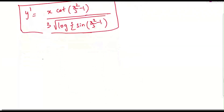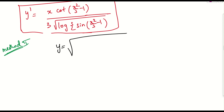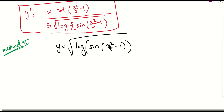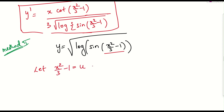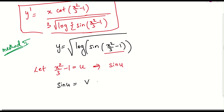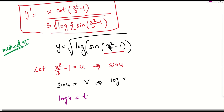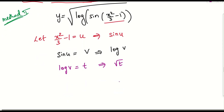If you feel this is a little bit difficult or confusing, let us do the second method. Come on to Method 2. Let me write the question: y equals root of log of sin of x squared by 3 minus 1. What I will do is simply take x squared by 3 minus 1 as u. Then sin u — take that as v. Then take log v as t. So y will be root of t. Now let us differentiate this function.